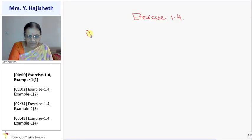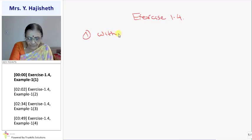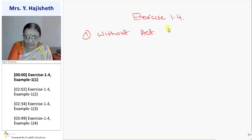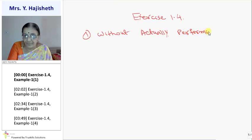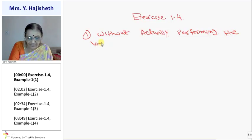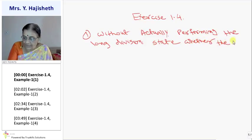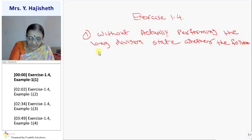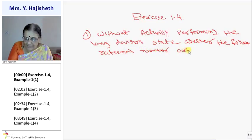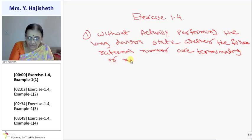Sum number 1: Without actually performing the long division — that means dividing numerator by denominator — without performing any division, state whether the following rational numbers are terminating or non-terminating recurring.